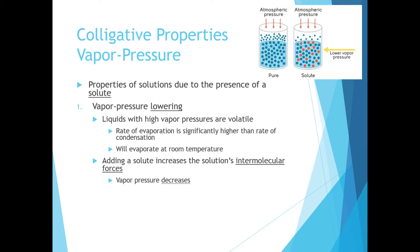When we add a solute to a solution, the solution has stronger intermolecular forces, which results in a lower vapor pressure. As seen in the picture here, we have a pure solvent where the particles in the liquid have escaped into the gas phase, and these gas particles are applying pressure on the surface of the solution. This is referred to as vapor pressure.